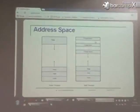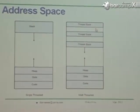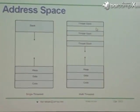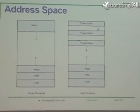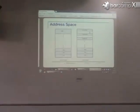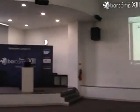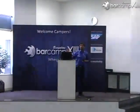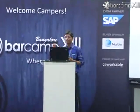Let us see how the address space is laid out. On the left we have a single-threaded system, and on the right a multi-threaded system. In a single-threaded system there is a single stack. In a multi-threaded process, threads share code, data, and heap, but each has a different thread stack. Every thread has its own thread stack — that is a very important concept.